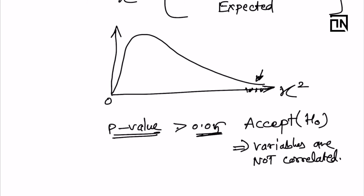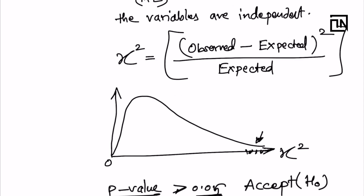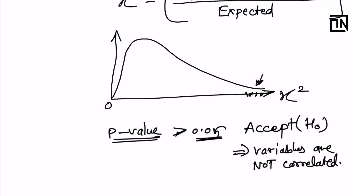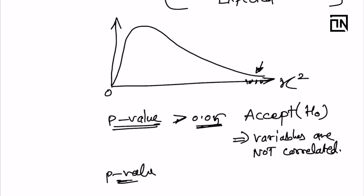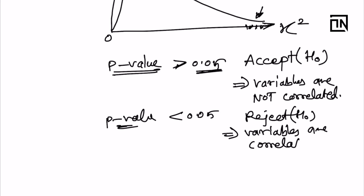If the p-value is greater than 0.05, we accept H0 — meaning the variables are not correlated — so we reject the predictor. Otherwise, if the p-value is less than 0.05, which is the common threshold, we reject H0, meaning the variables are correlated. Just as with ANOVA, a low p-value leads us to accept the variable. Based on this p-value, we either accept or reject the predictor in our feature selection steps.